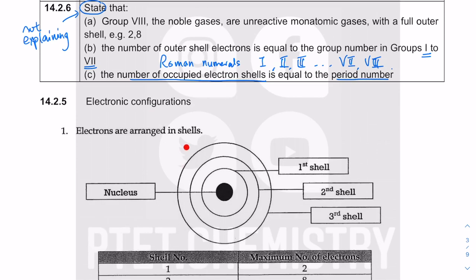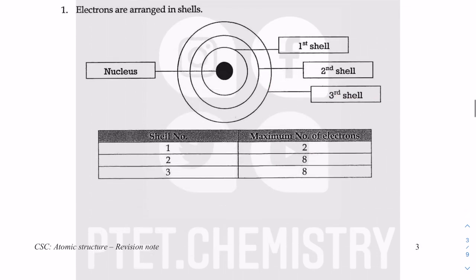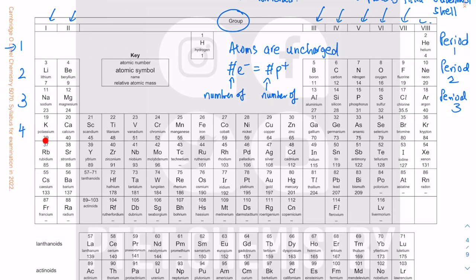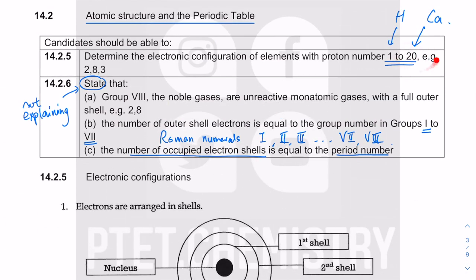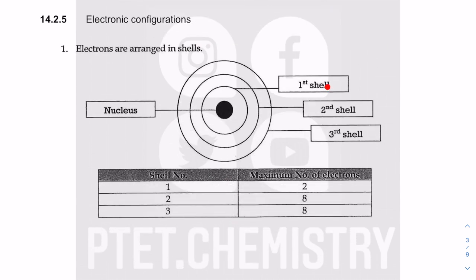Electrons are arranged in shells. These are not physical shells — we draw them this way to distinguish them easily. The first shell is closest to the nucleus, the second shell is the next one out. There is also a fourth shell because you fill the fourth horizontal row for elements up to element twenty, potassium and calcium.